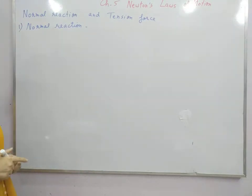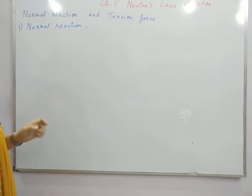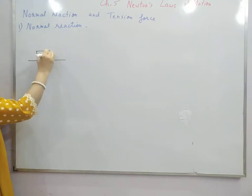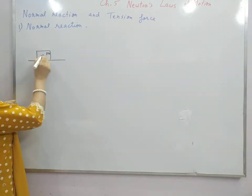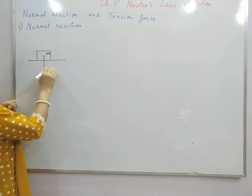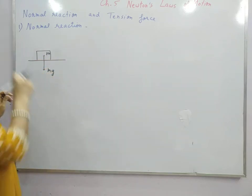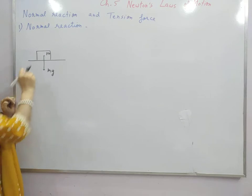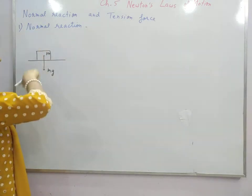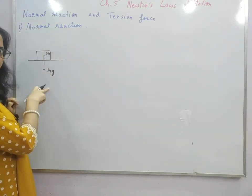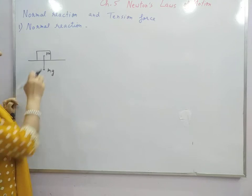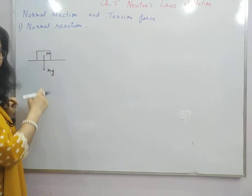The first force is normal reaction. When an object is kept on a surface, suppose this object is kept on the surface, it has mass m. So obviously it will have gravitational pull on it and this will be the weight of the object. Now this object is at rest. Is there acceleration on this body due to the gravitational pull? It appears that gravitational acceleration is there, but in that case the object must have moved downwards under the ground.